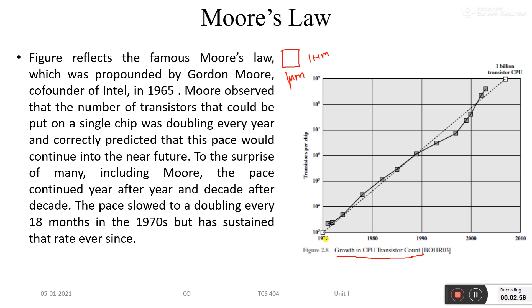This figure shows the growth in CPU transistor count, where the number of transistors continuously increases on a single chip. It was found that one billion transistors per CPU had been achieved. Transistors per chip, measured in billions, reached between 10^8 and 10^9 in the decade from 2000 to 2010, which is a great number.